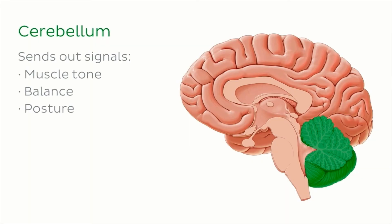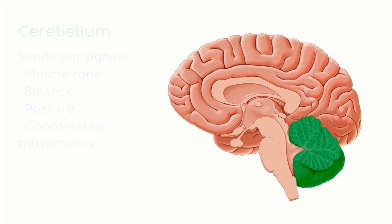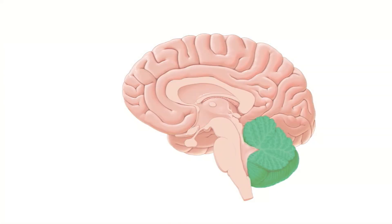This means that you have no conscious control over these signals and it happens automatically. The cerebellum also helps with fine, voluntary, coordinated movements, which you do have control over. And these movements will come in handy for looking at some deeper brain structures in our next section.